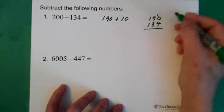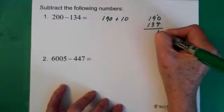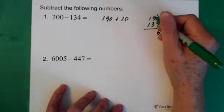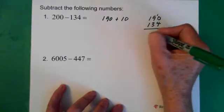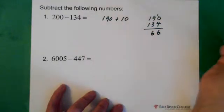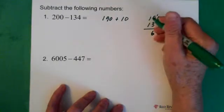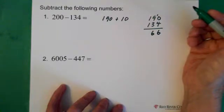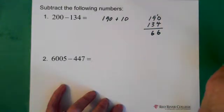Here we have 10 minus 4, which is 6. 9 minus 3, which is 6. And 1 minus 1, which is 0. So then the answer should be 66.